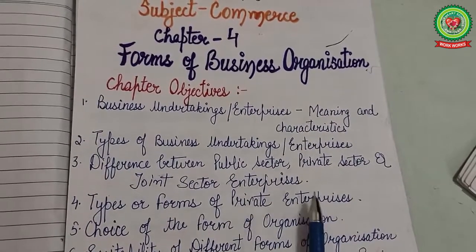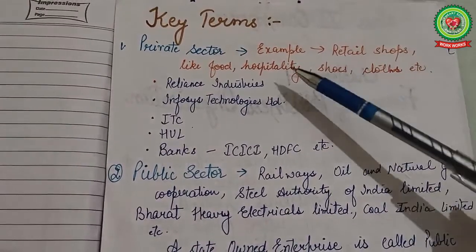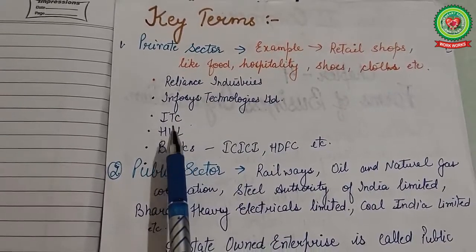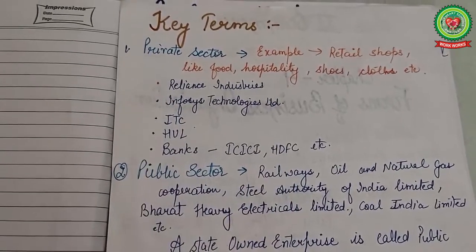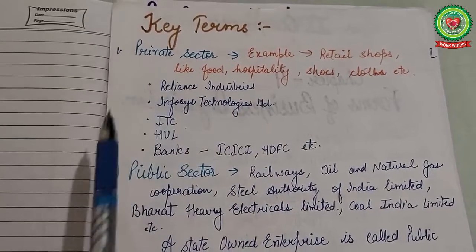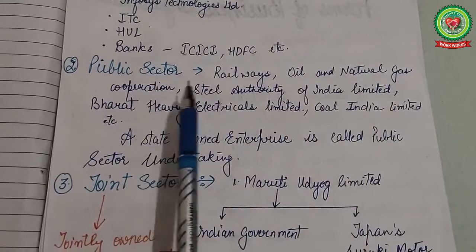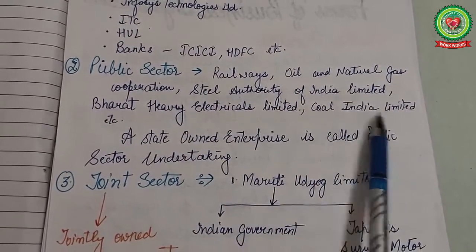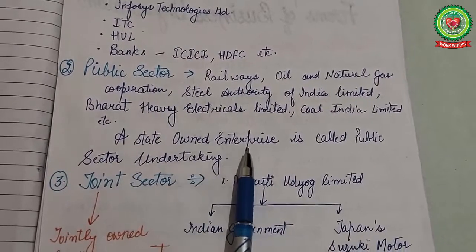First, we will discuss key terms. The first is private sector. Examples include retail shops like food, hospitality, shoes or clothes, as well as Reliance Industries, Infosys, ITC, and private banks like ICICI Bank and HDFC. These are all examples of private sector, meaning ownership and management is in the hands of private individuals. Next is public sector. Examples include Railways, Oil and Natural Gas Corporation, Steel Authority of India Limited, and Bharat Heavy Electricals Limited. These are state-owned enterprises called public sector undertakings.